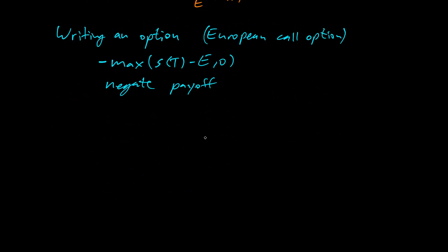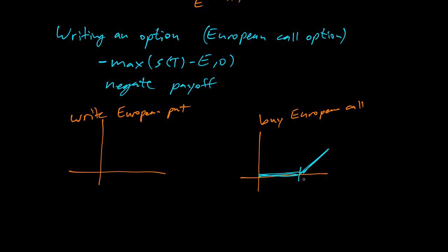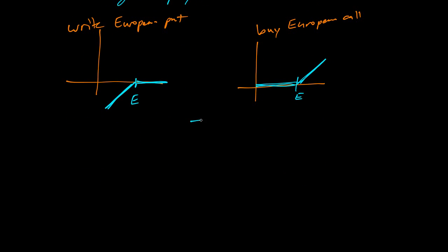Now we can do put-call parity. What if I write a European put and buy a European call? Buying the European call gave this payout at E. Writing the European put gives this payoff going down because I'm negating. Add them together.